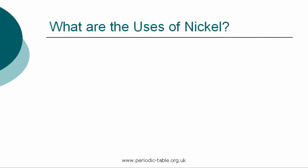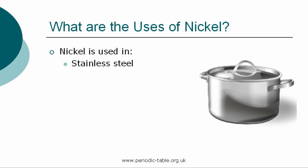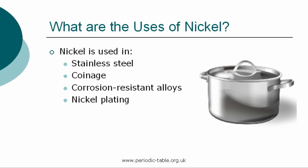Once the properties of an element have been established, we then have the ability to identify how it can be used. One of the most common uses of nickel is in stainless steel appliances. In 1913, English metallurgist Harry Brearley accidentally discovered that adding chromium to low-carbon steel gave it stain resistance. The addition of nickel and other elements enhances the corrosion resistance of stainless steel. Nickel is also used in coinage, corrosion-resistant alloys, nickel plating, vaults, and nickel-cadmium batteries.